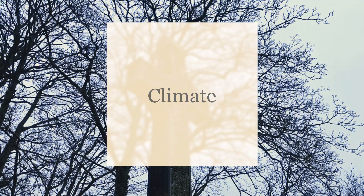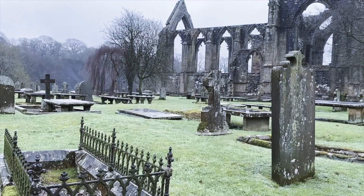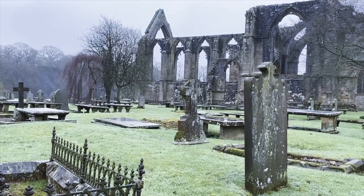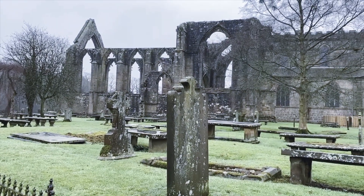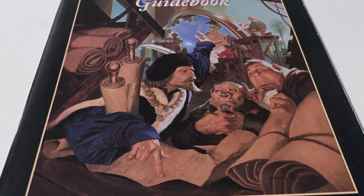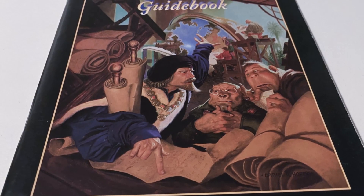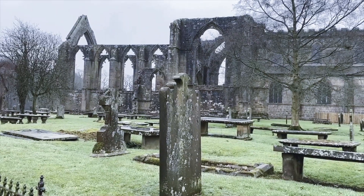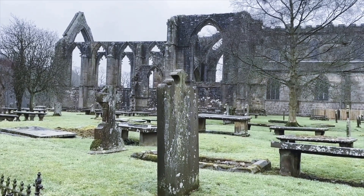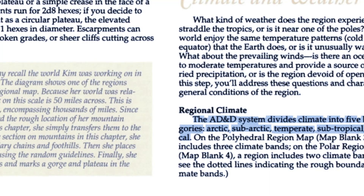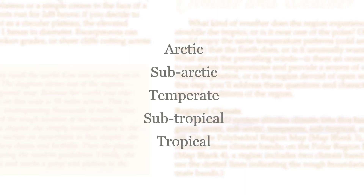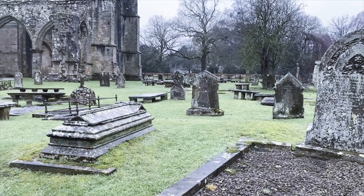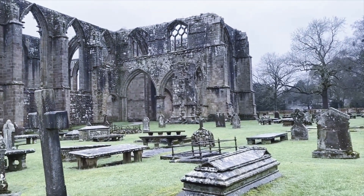The random wilderness generation method can be expanded to include random climate and weather to add further depth to our solo campaign. A great resource for deciding on a method to generate wilderness that works with other climates is the World Builders Guidebook, which was an AD&D accessory written by Richard Baker and published in 1996. The World Builders Guidebook explains that the AD&D system divides climate into five basic categories: Arctic, subarctic, temperate, subtropical, and tropical. We can adopt these climate categories into our solo rule system.